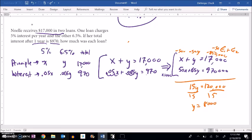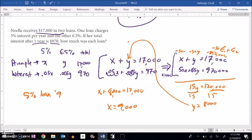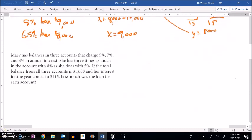And if Y is 8,000, I can plug it back into here to figure out what X is. X plus 8,000 equals 17,000. So it looks like X is 9,000. So the 5% loan was for $9,000, and the 6.5% loan was for $8,000. And they work here. I can plug them back into here to make sure that they work well. All right, let's dig into the next problem.